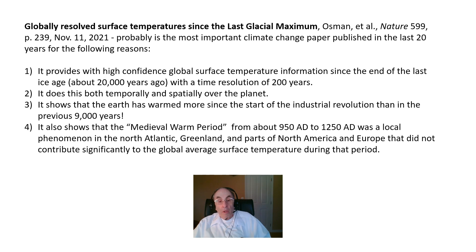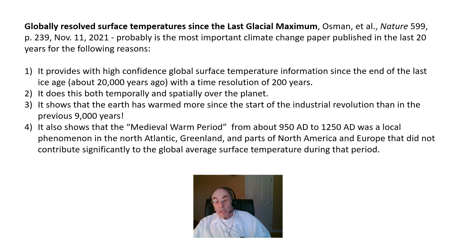It also shows that the medieval warm period, from about 950 AD to 1250 AD, was a local phenomenon in the North Atlantic, Greenland, and parts of North America and Europe that did not contribute significantly to the global average surface temperature. This is important because the medieval warm period is often cited by climate change skeptics to suggest that today's climate change could be due to natural causes, not related to the burning of fossil fuels.